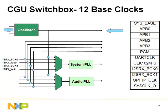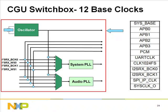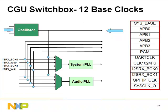The CGU switch box selection stage: on the left are seven input clocks generated from the oscillator, I2S inputs, and PLLs. On the right, 12 base clocks are generated by the switch box. Each of these base clocks can choose any of the seven input clocks as their source — this is called the selection stage.